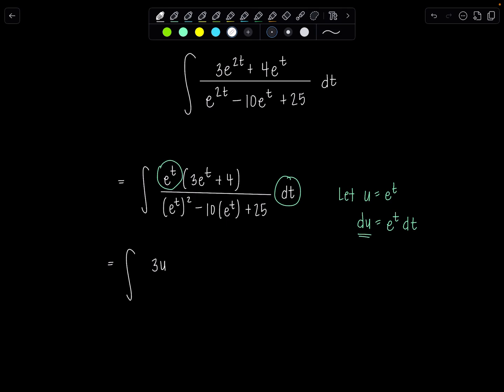So this is going to be 3u plus 4 over u squared minus 10u plus 25 du. Beautiful.